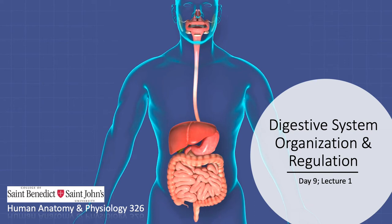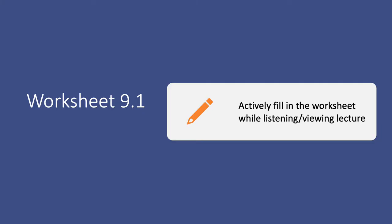Hello again and welcome to day 9 of lecture. We're going to move from smooth muscle now to the digestive system, and this is a nice smooth transition because smooth muscle lines the GI tract. We're putting this all together now and will start today with the digestive system organization and then talk about some basic regulation of that system. We're on to worksheet 9.1, a very short simple worksheet to follow along with today.